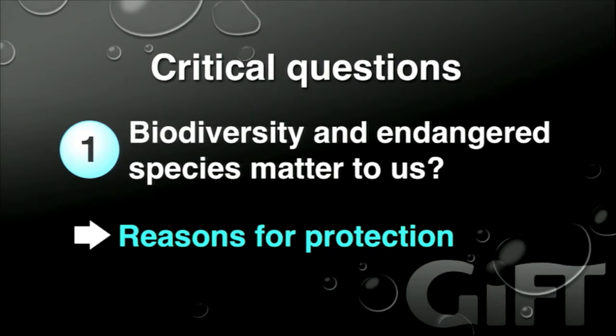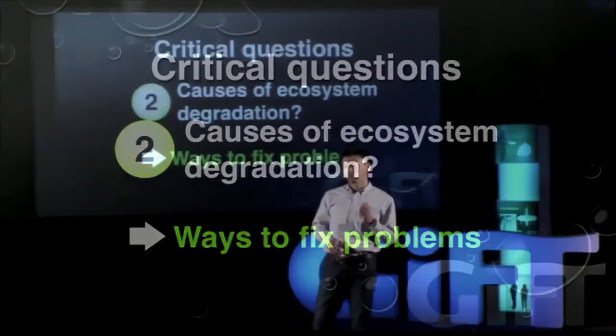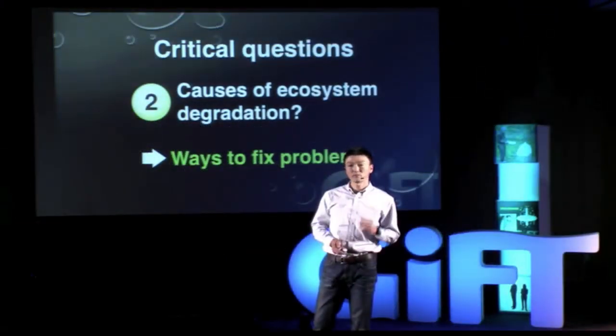The first question: we need to know why and how species diversity or endangered species matter to us. The answer would provide us good logical reasons to invest money and time in protecting them. Secondly, we need to know the root causes of environmental degradation, so that managers can come up with ways to fix problems effectively and efficiently.